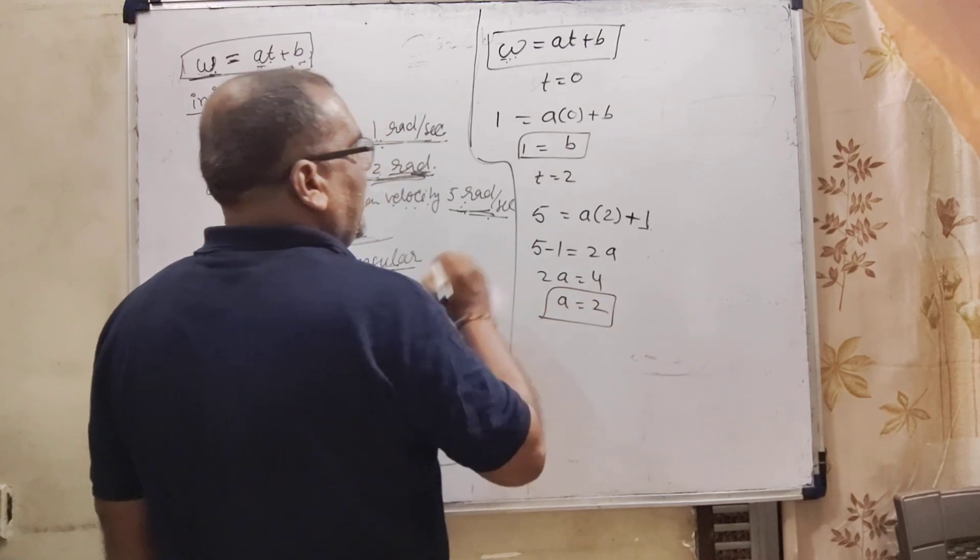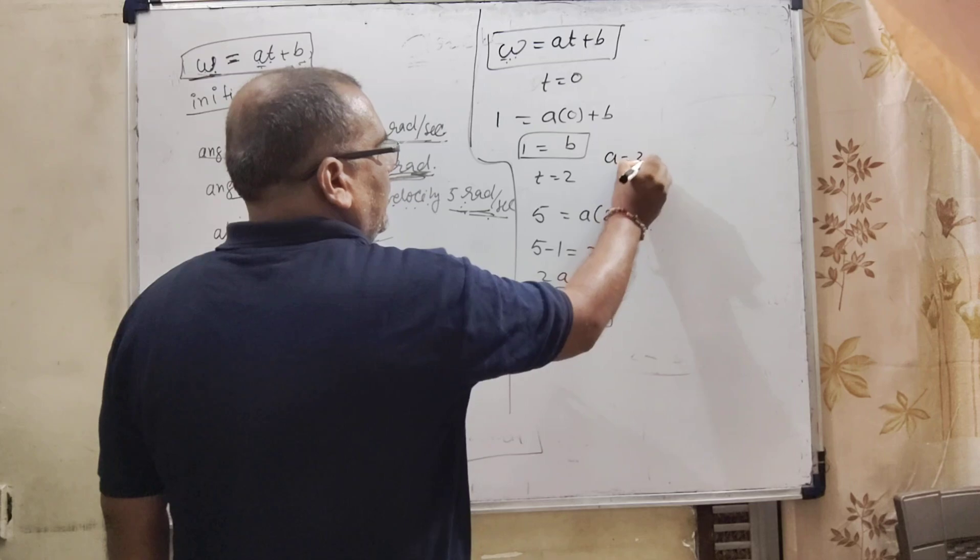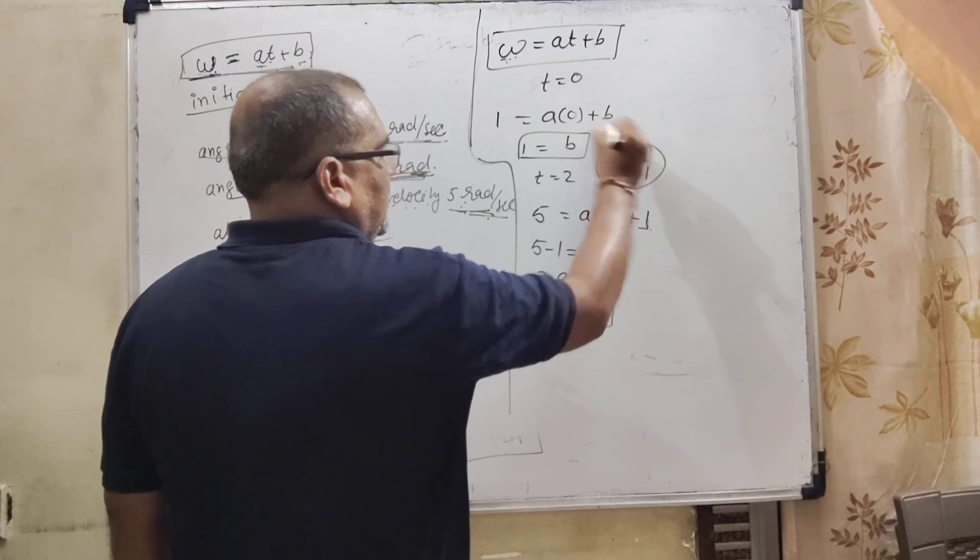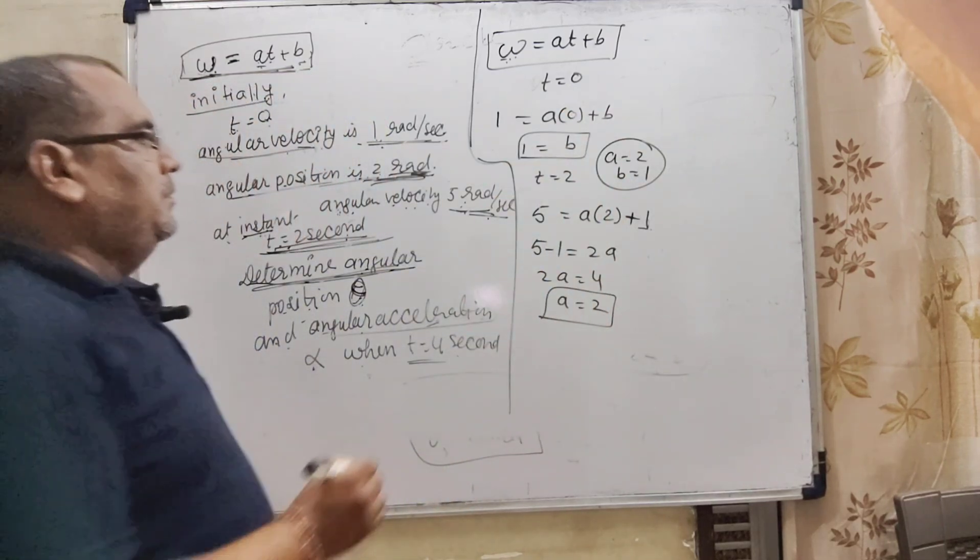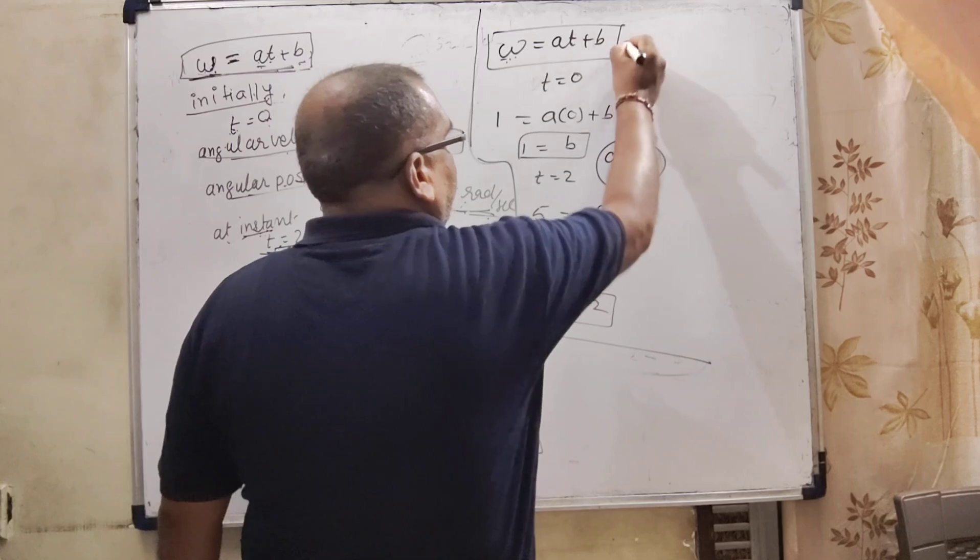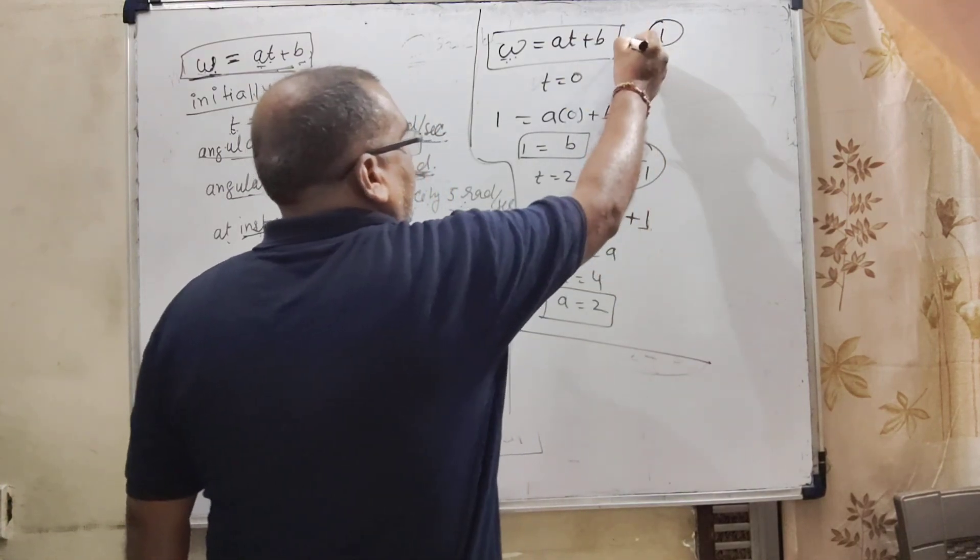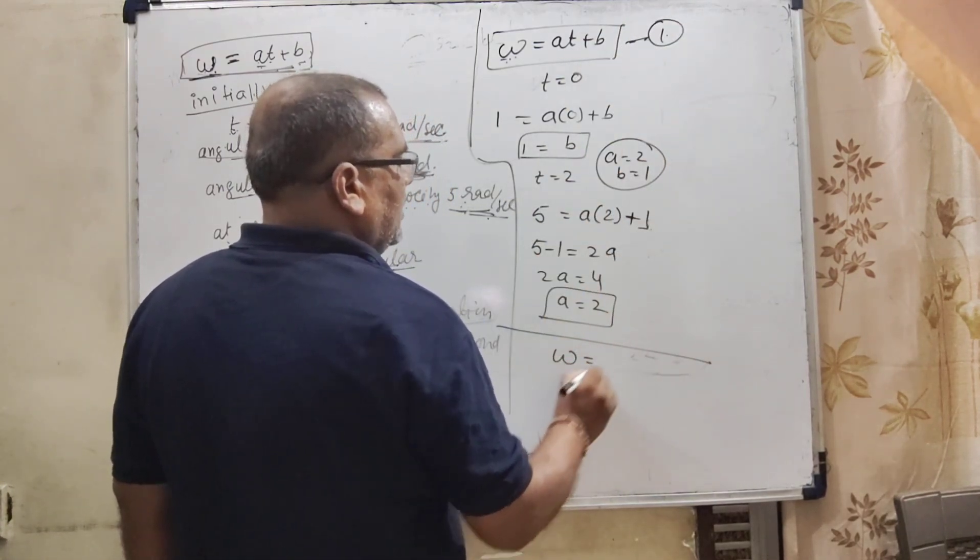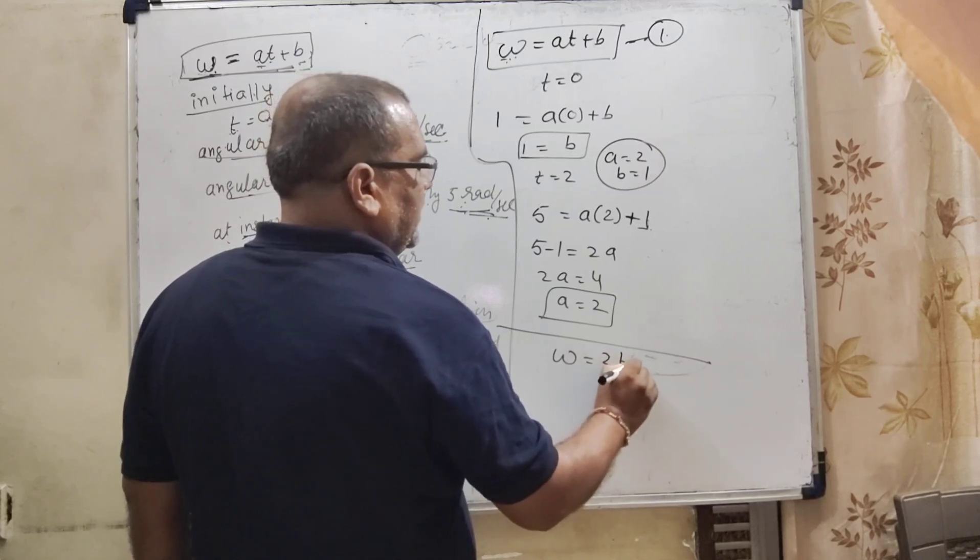So here we get the value of constant a equal to 2 and b equal to 1. Now substitute this value in equation first. Let us say this equation is first: omega equals 2t plus 1.